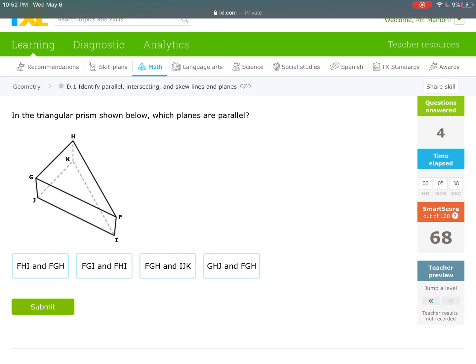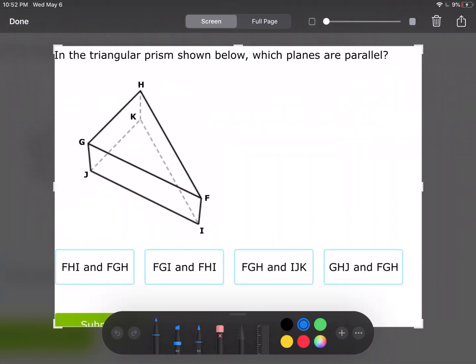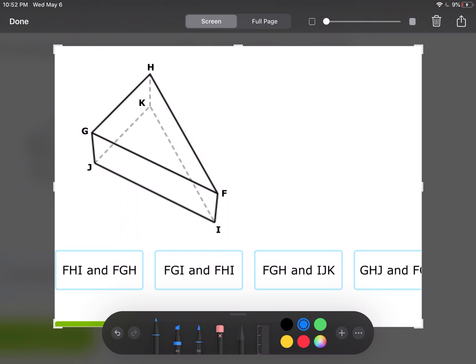Which planes are parallel? This time planes are parallel. We're going to try FHI. I'm selecting this entire plane and FGH. I'm going to use a different color.